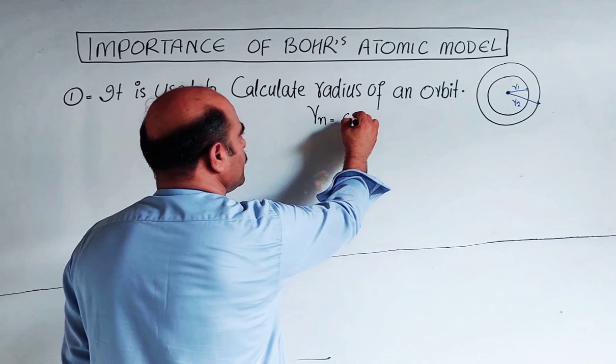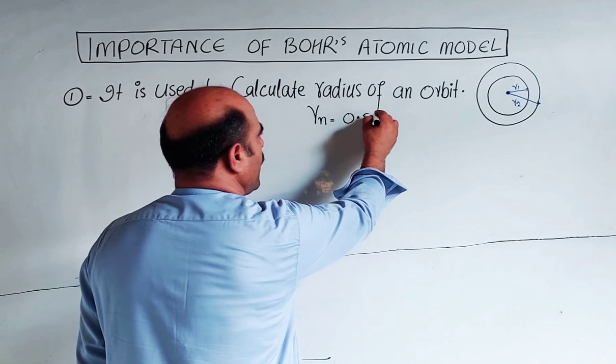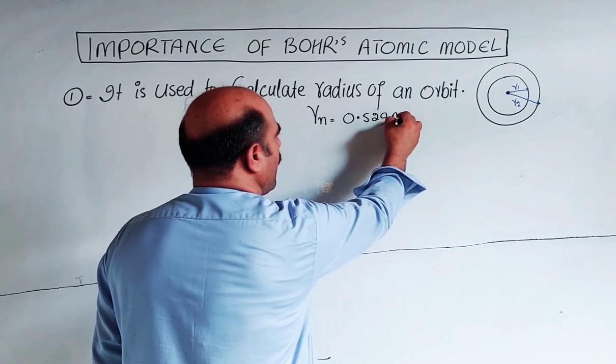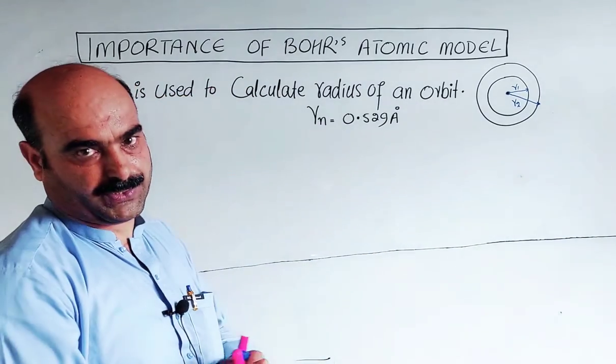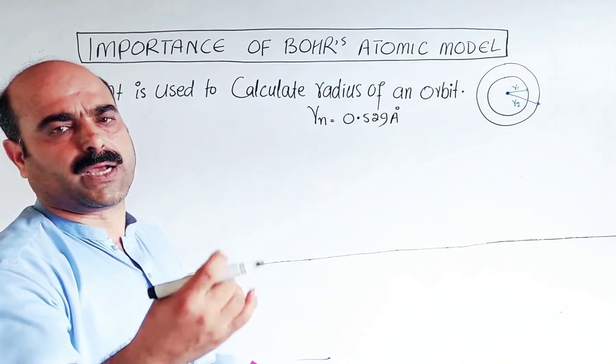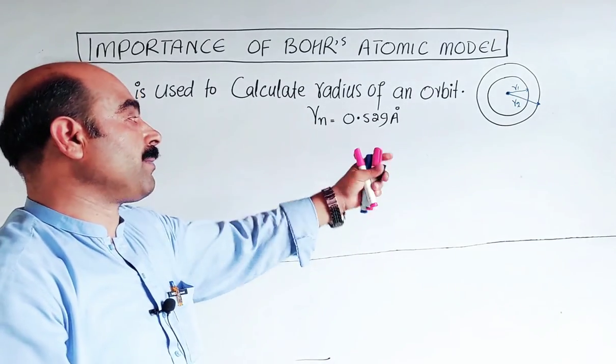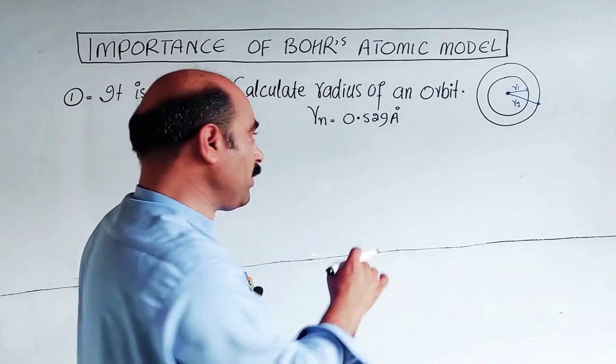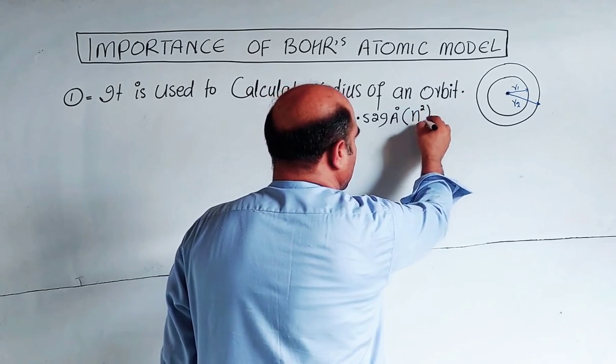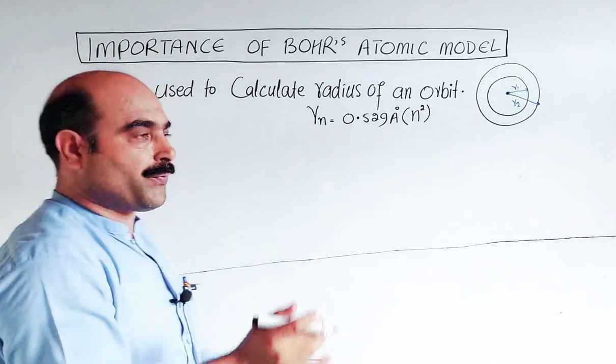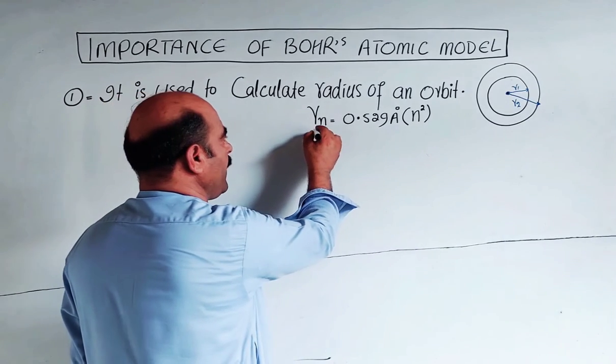The radius of any orbit is equal to 0.529 angstrom times n squared. Angstrom is the unit of very short distances like wavelength or radius of atom. N is the number of the orbit.